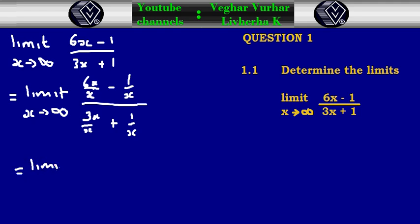The X is cancelled, so we have 6 minus 1 over X divided by 3 plus 1 over X. From this stage you can substitute the limit.